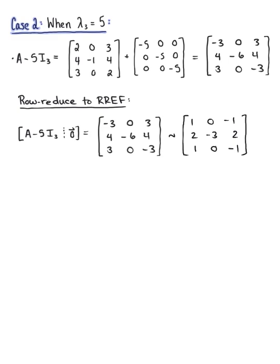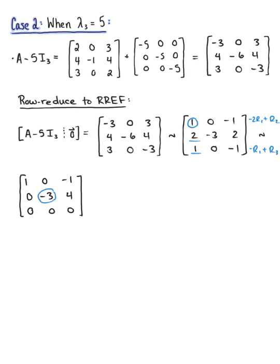We have echelon form. Using the second pivot position, we multiply the second row by -1/3, leaving the matrix [[1, 0, -1], [0, 1, -4/3], [0, 0, 0]]. We can see that x sub 3 is a free variable. This is equivalent to the linear system: x sub 1 = x sub 3, x sub 2 = (4/3) x sub 3, and x sub 3 is free.